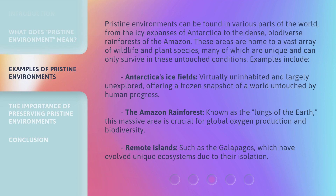Pristine environments can be found in various parts of the world, from the icy expanses of Antarctica to the dense, biodiverse rainforests of the Amazon. These areas are home to a vast array of wildlife and plant species, many unique and surviving only in untouched conditions. Examples include Antarctica's ice fields, virtually uninhabited and largely unexplored, offering a frozen snapshot of a world untouched by human progress; the Amazon rainforest, known as the lungs of the earth, crucial for global oxygen production and biodiversity; and remote islands such as the Galapagos, which have evolved unique ecosystems due to their isolation.